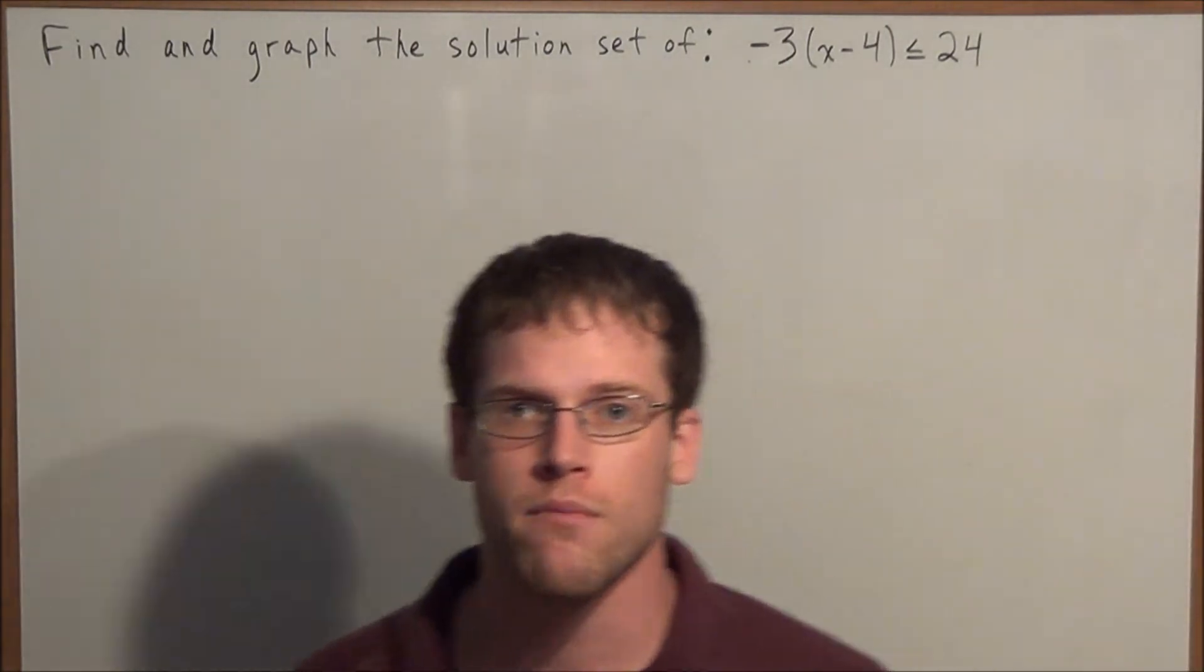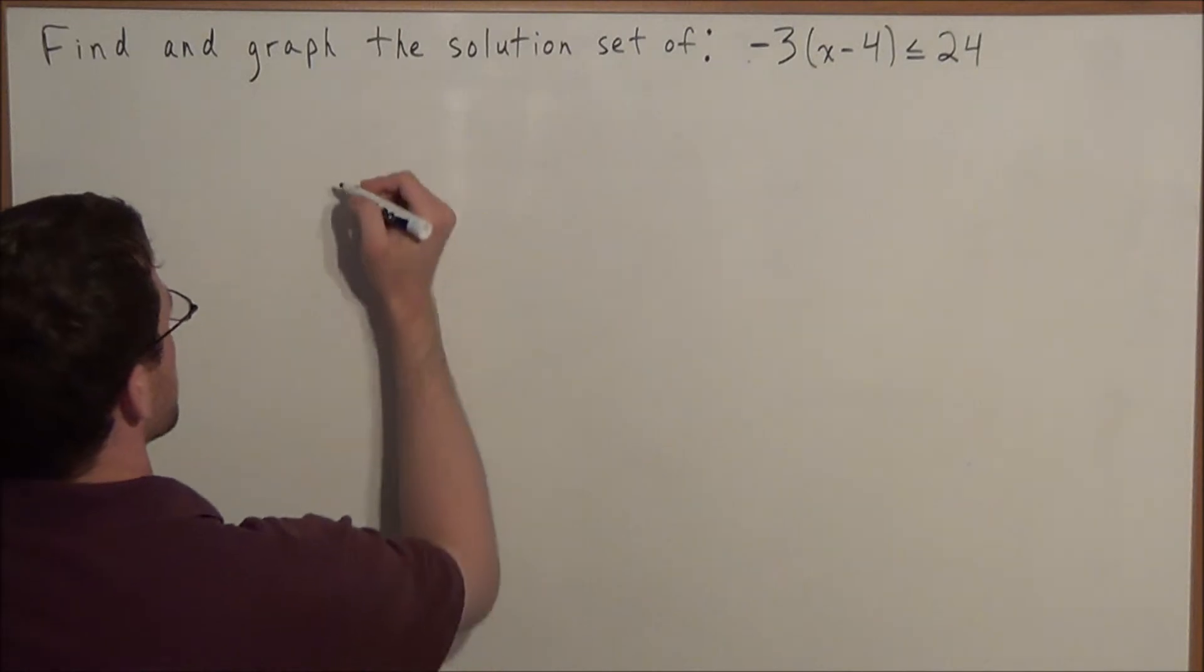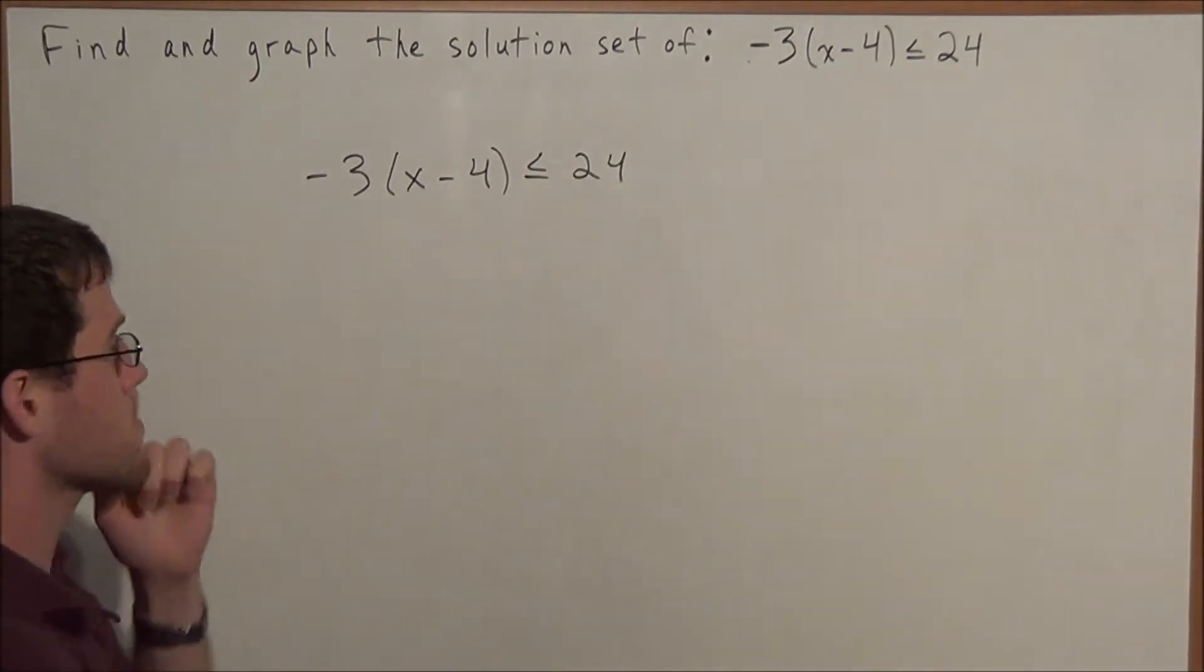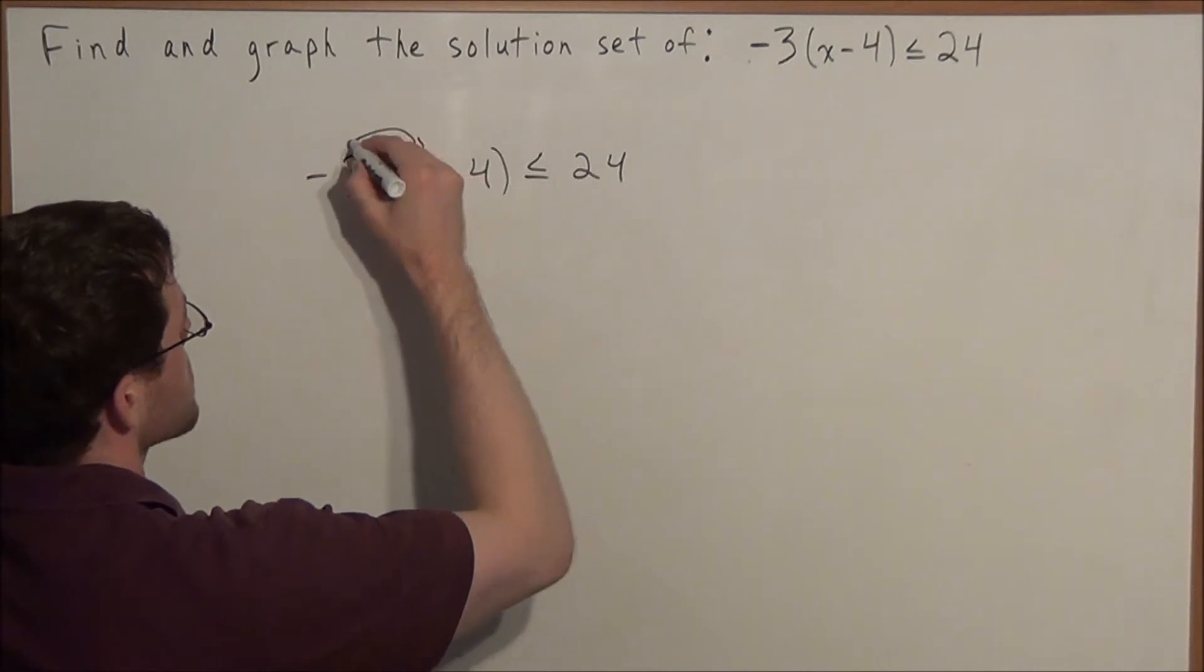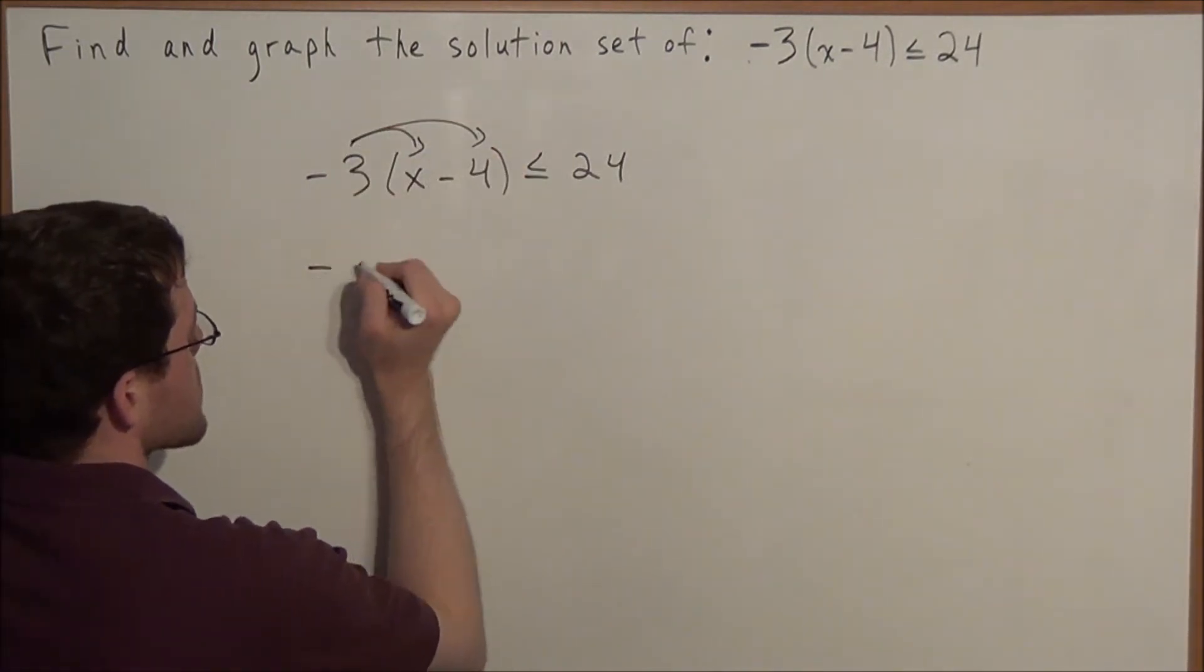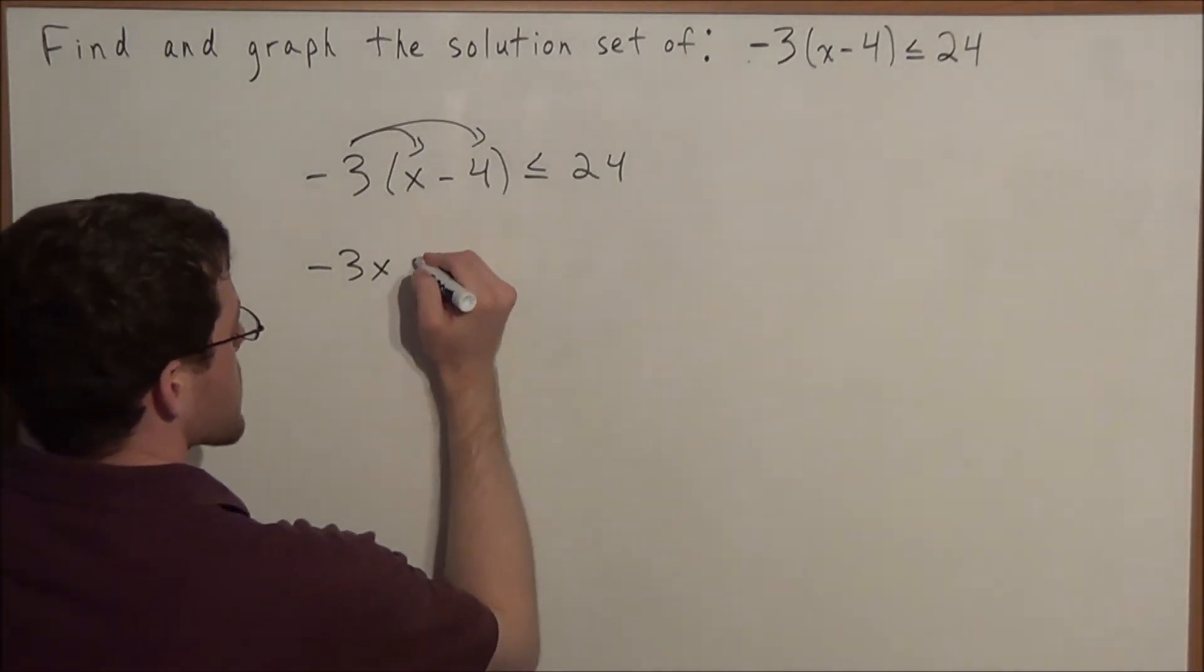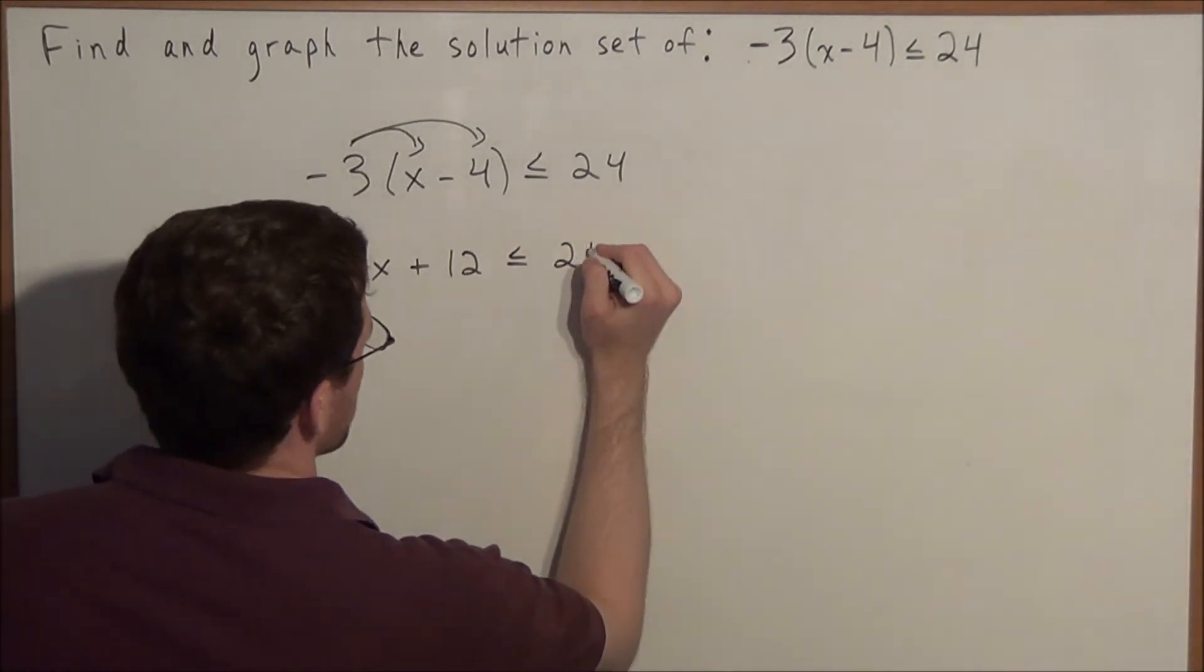We can start this problem by treating it just like an algebra equation. When we have -3(x - 4) ≤ 24, we can start by distributing this negative 3. So we have -3 times x is -3x, and -3 times -4 is positive 12. So we have -3x + 12 ≤ 24.